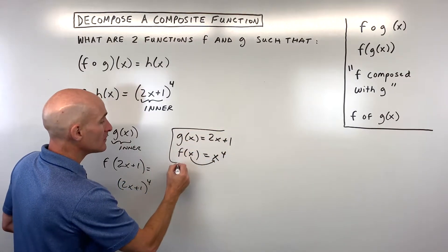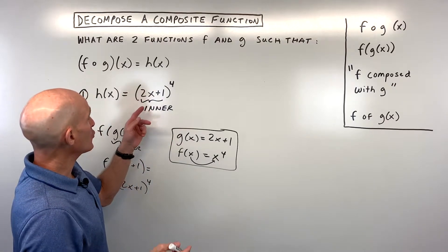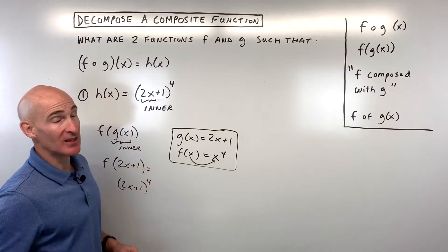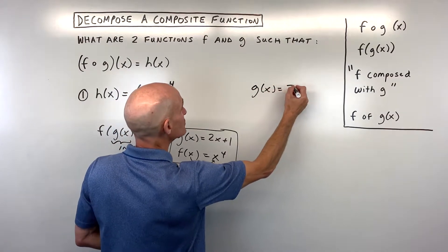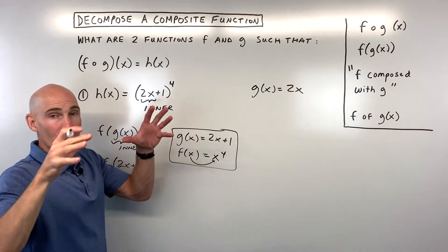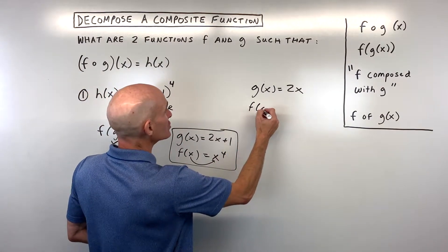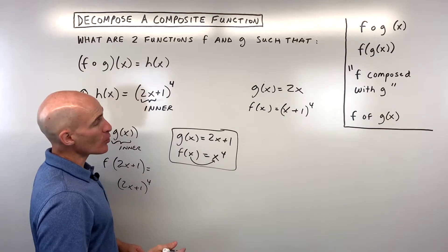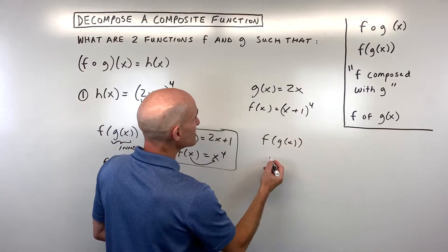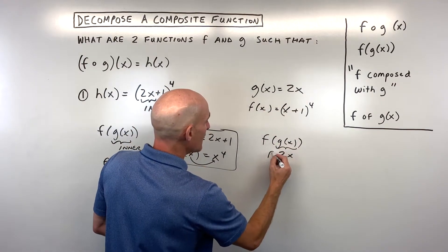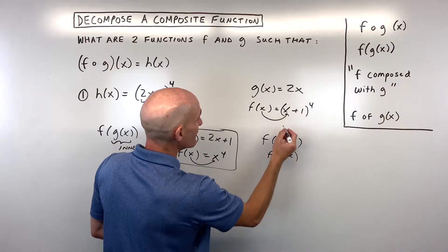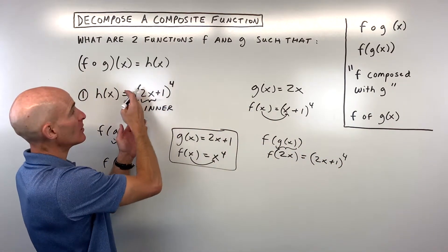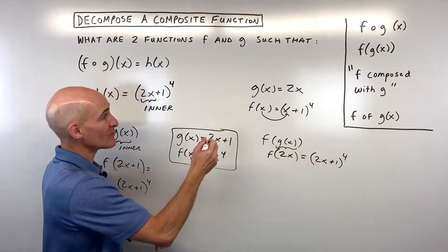This is just one possibility — there are other possibilities. Instead of the whole quantity being the inner function, you could make just 2x the inner function. So another possibility: g of x equals 2x, and then f of x equals x plus 1 to the fourth power. Checking by composition, g of x equals 2x goes in place of x on the right, and you get back the original h of x function.